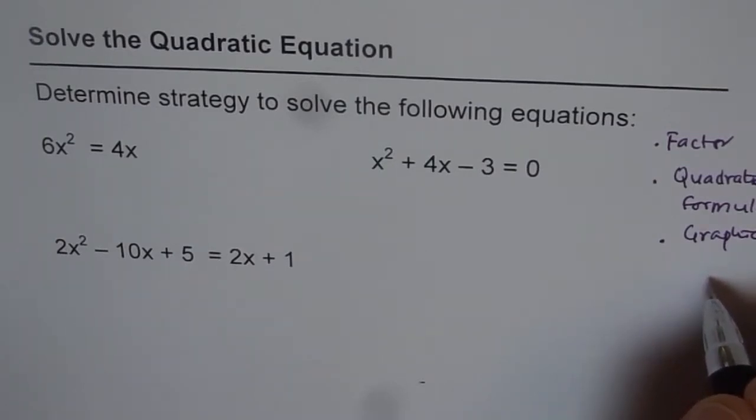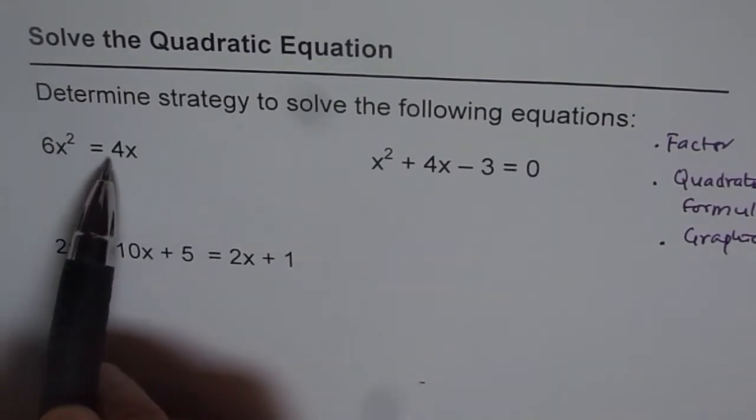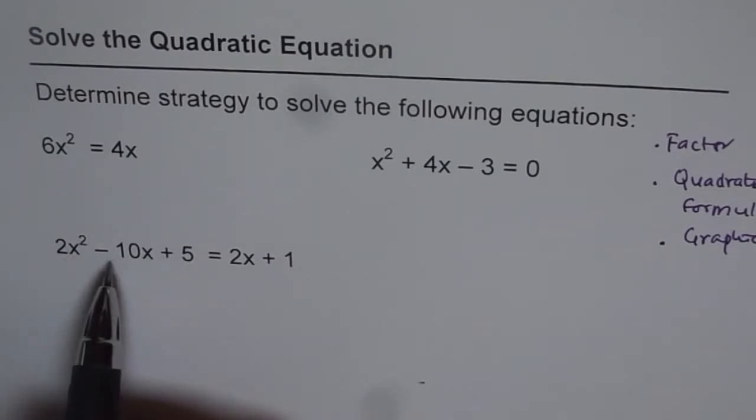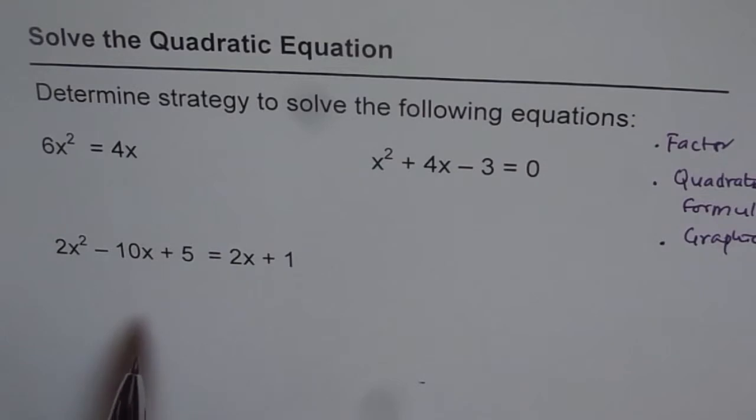Now, rearranging equations is the first part. As you see in two of these examples, we have 6x² = 4x. And here, we have 2x² - 10x + 5 = 2x + 1.